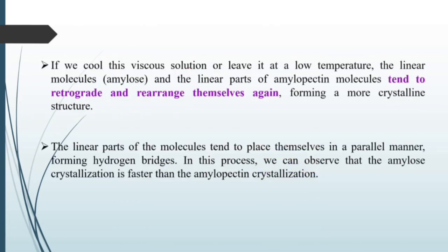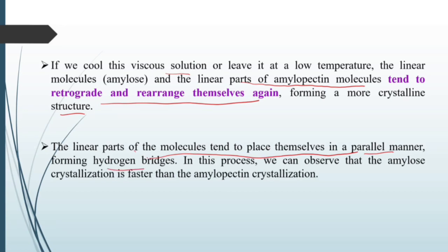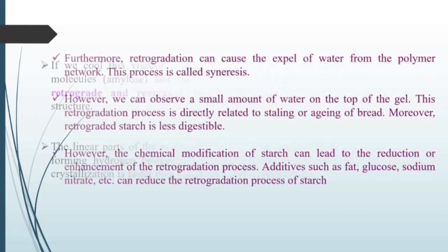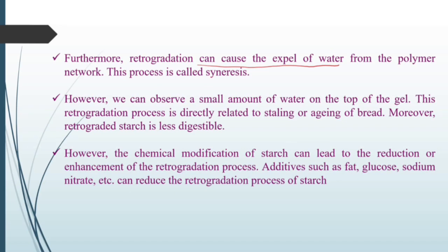If we heat starch and dissolve it in water, it causes the destruction of the crystalline structure of amylose and amylopectin molecules, leading to hydration and forming a viscous solution. If we cool this viscous solution or leave it at a low temperature, the linear molecules and the linear part of amylopectin molecules tend to retrograde and rearrange themselves again, forming a more crystalline structure in a parallel manner, forming hydrogen bridges between them. In this process, amylose crystallization is faster than amylopectin crystallization. Furthermore, retrogradation causes expulsion of water, which can also be known as syneresis — where a small amount of water appears on top of the gel. This retrogradation process is directly related to staling or aging of bread. Moreover, retrograded starch is less digestible. The chemical modification of starch can lead to reduction or enhancement of retrogradation, and additives like fat, glucose, and sodium nitrate can reduce the retrogradation process.